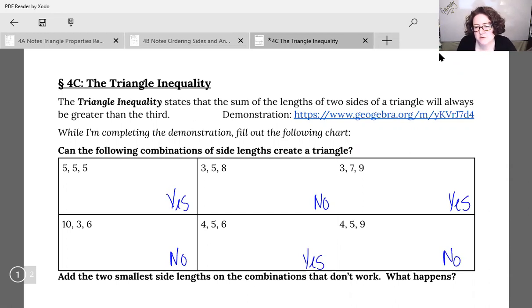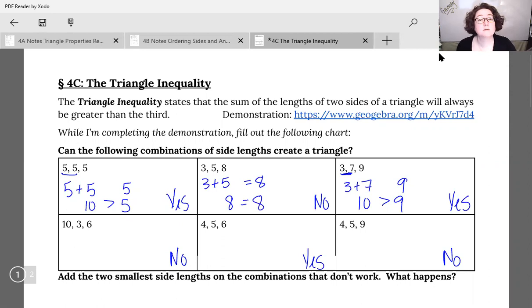Can you see any patterns? The hint below says add the two smallest sides together on the combinations that didn't work. The first one that didn't work, 3 and 5, if I do 3 plus 5 that equals 8. Let's compare that to something that did work. Two smallest sides, 5 plus 5, compare that to 5. 5 plus 5 is 10, which is bigger than 5. And 3, 7, and 9, the two smallest sides 3 and 7, 3 plus 7 is 10, that's bigger than 9. 3 plus 5 is 8, that's equal to 8, it wasn't bigger. So triangle inequality states two sides have to add up to be bigger than the third to make a triangle. There's our proof.